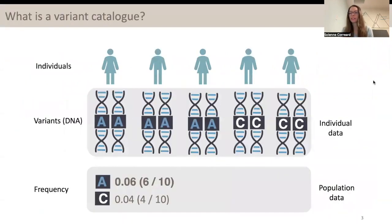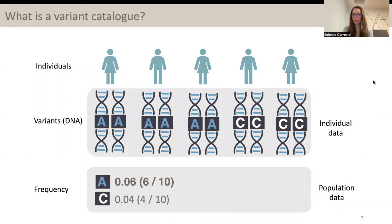First, what is a variant catalogue or a variant library? When we talk about genomics and DNA, a variant catalogue is the frequency of the variants within a population. For example, in this population of five individuals, they all get their whole genome sequenced. And at a certain position in their DNA, some individuals carry an A, and some individuals carry a C. From that individual information, we can deduce the frequency of each allele in the population.